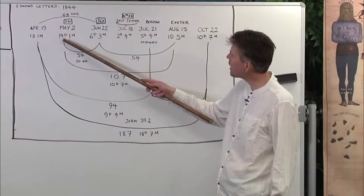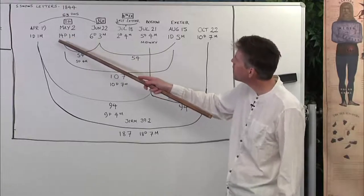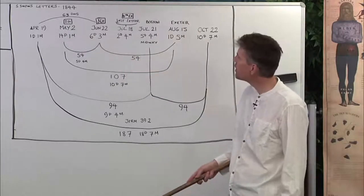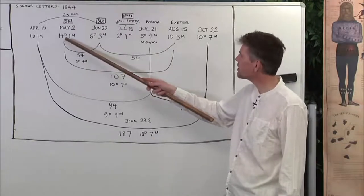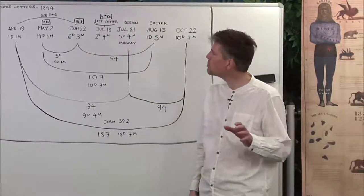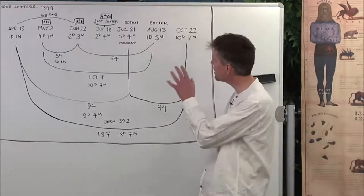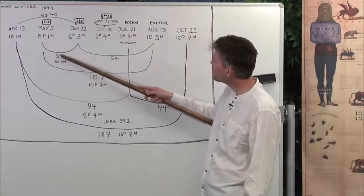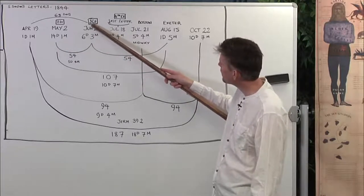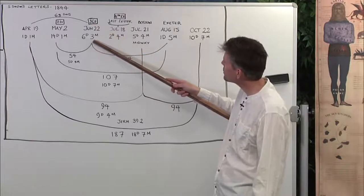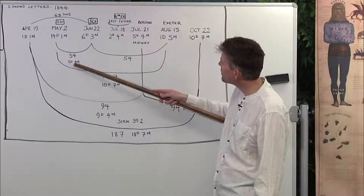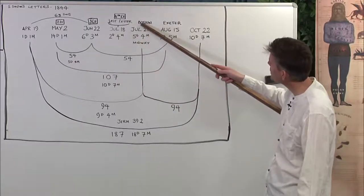Samuel Snow's second letter was published on the 14th day of the first month, which is Passover. In that letter, he talks about Christ being crucified in the midst of the week, connecting it to the year AD 31, so it has a lot of Passover symbology. It's 54 days from the 2nd of May to the 22nd of June, which was the date when he wrote his third letter. That was the sixth day of the third month, which was Pentecost, with a 50-to-4-day period. We can connect that with the 5th day of the 4th month when he's going to be presenting the Midnight Cry message in Boston.